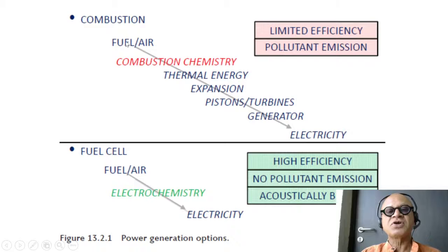So there was our combustion where combustion chemistry was producing limited efficiency and lots of pollutant emission including greenhouse gases, whereas fuel cell would go through the fuel and air and run through an electrochemistry instead of combustion chemistry.